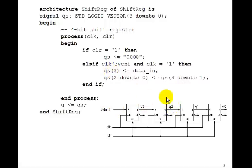So Q2 gets the old Q3, and the new QS3 gets the data in. Same for Q2 gets the old Q3, Q1 gets the old Q2, Q0 gets the old Q1. So this only works if QS is a signal, because remember signals don't get evaluated until the end of the process.